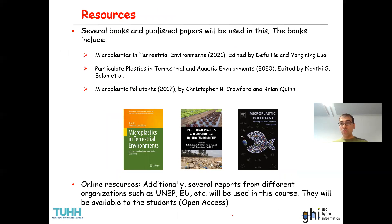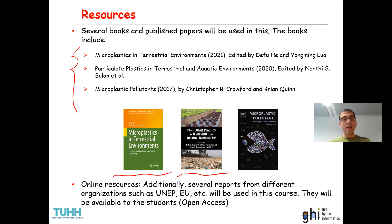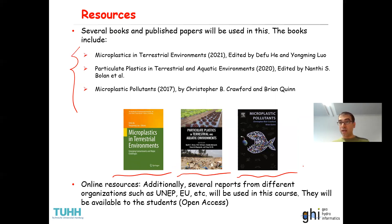In terms of resources, I use several books and many papers and reports published by different organizations to prepare this lecture series. I mainly use three books: Microplastics in Terrestrial Environments published in 2021, Particulate Plastics in Terrestrial and Aquatic Environments published in 2020, and Microplastic Pollutants published in 2017. In addition, I use several papers and reports published by the UN, EU, and others. The majority of those reports are open access, so you can find them on the internet.